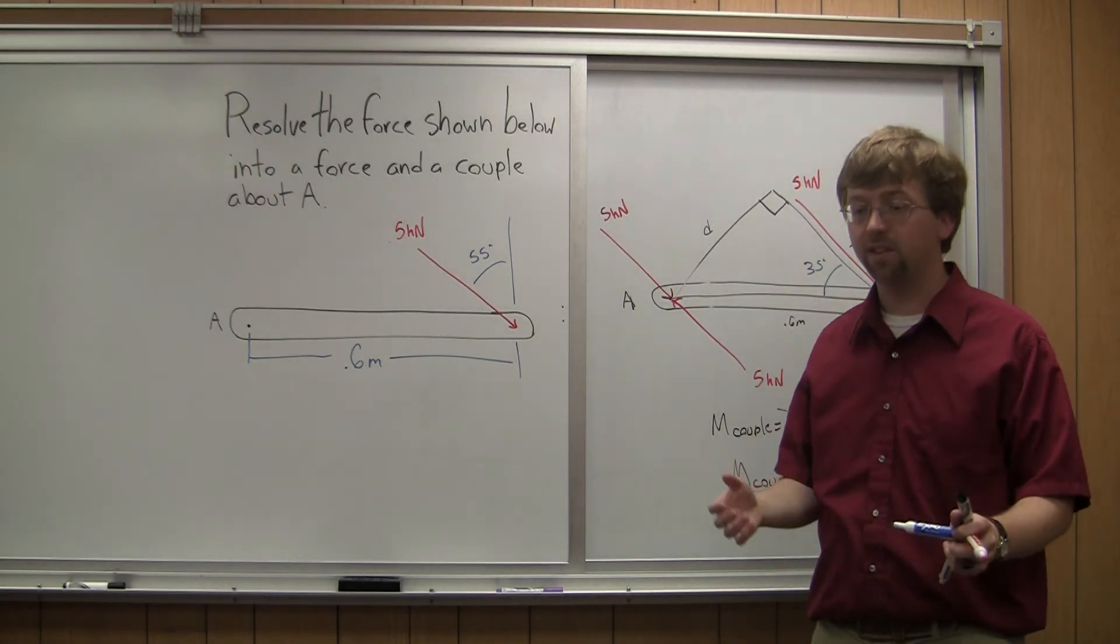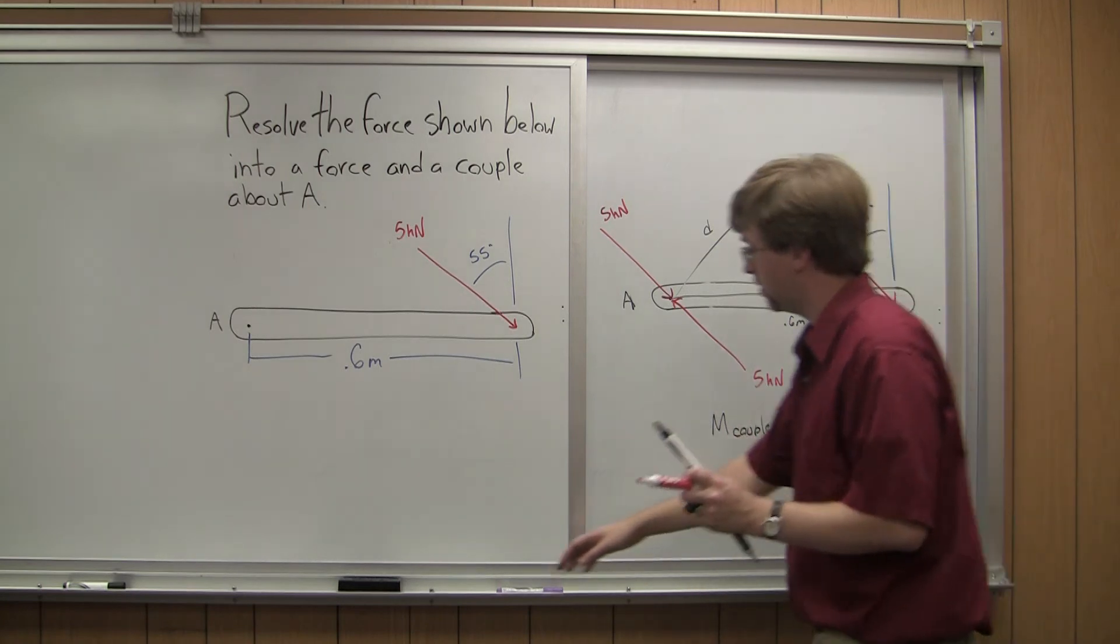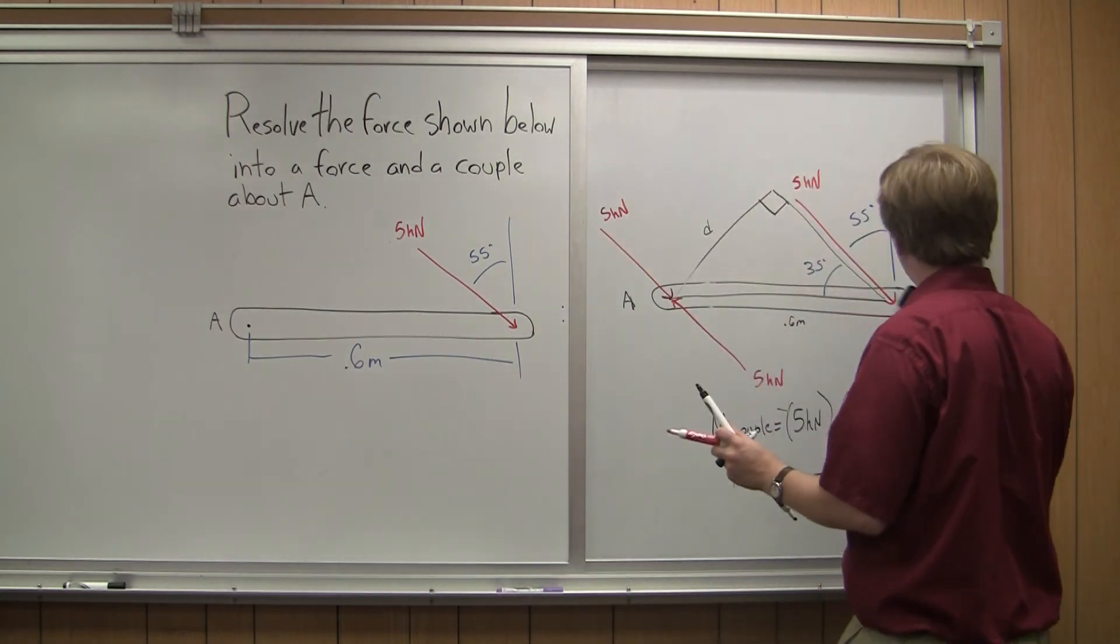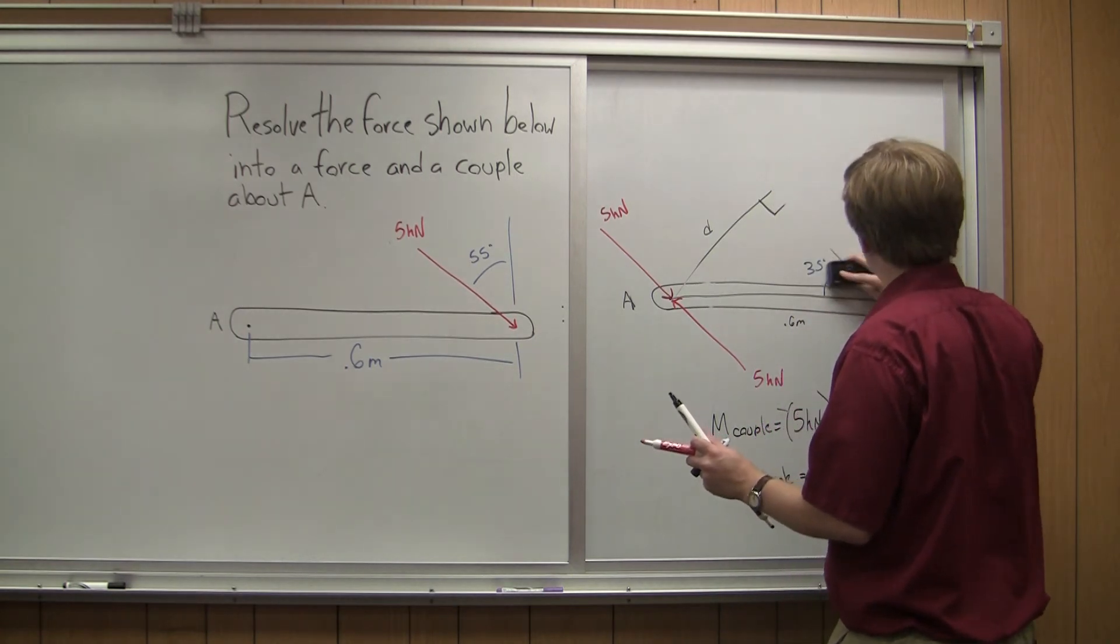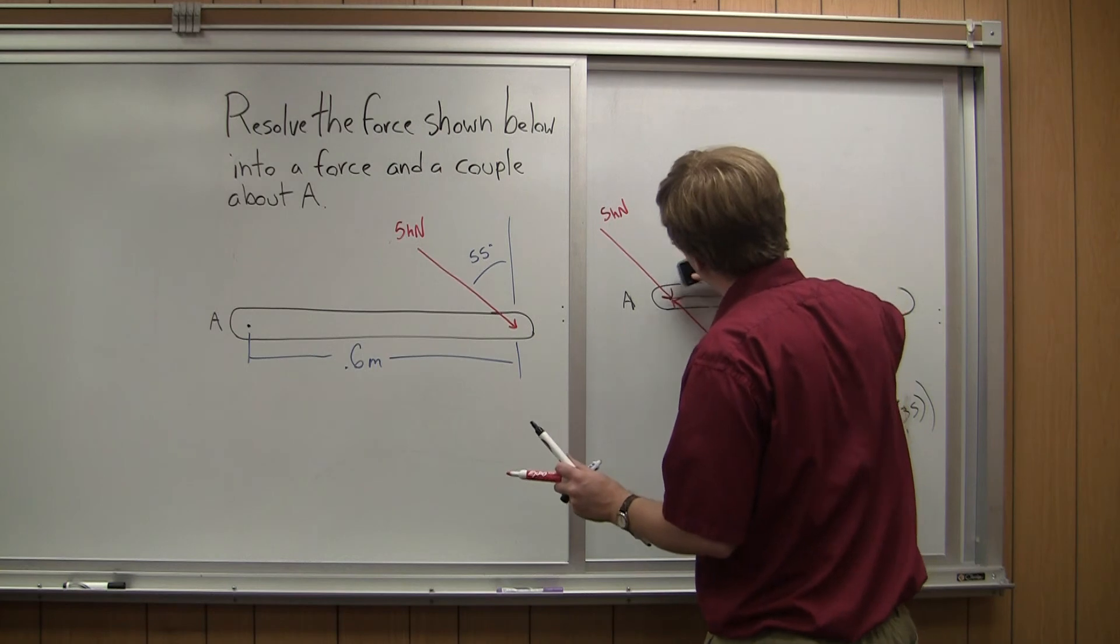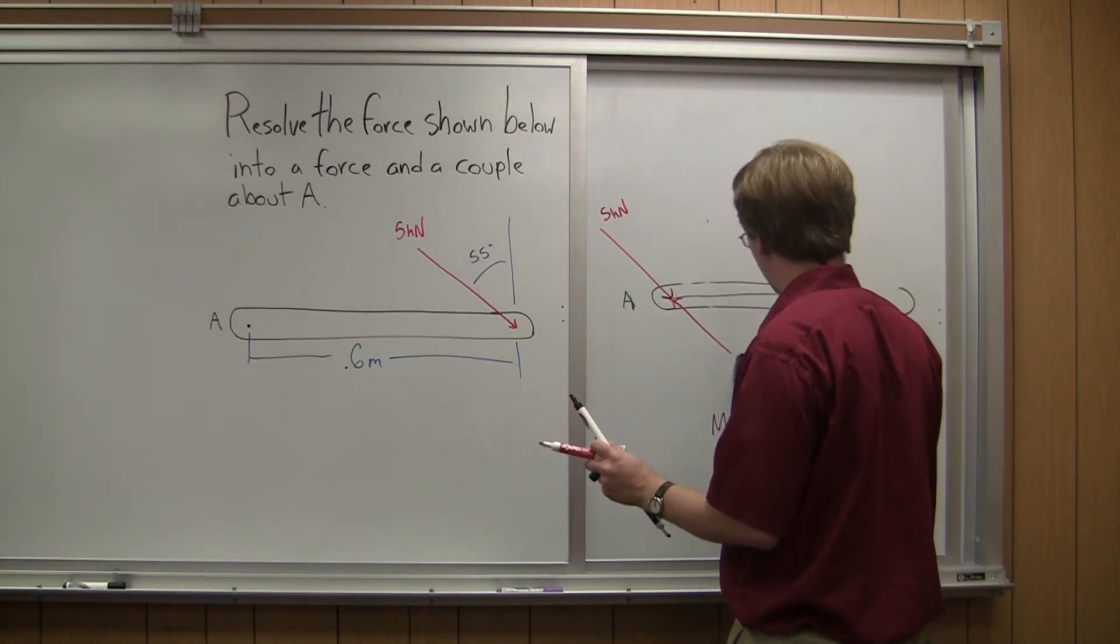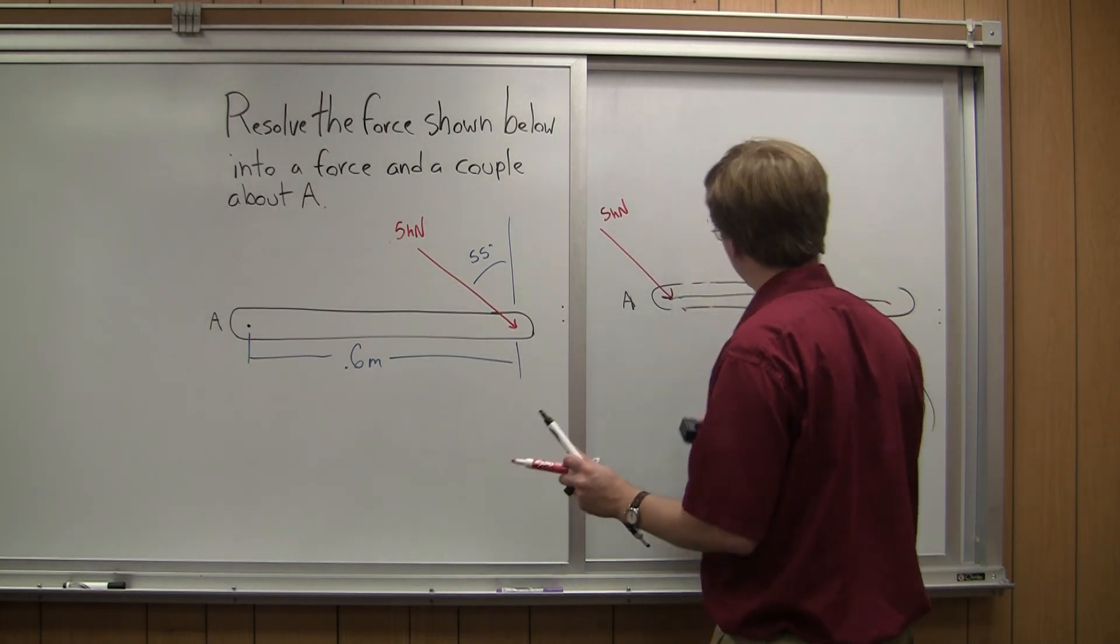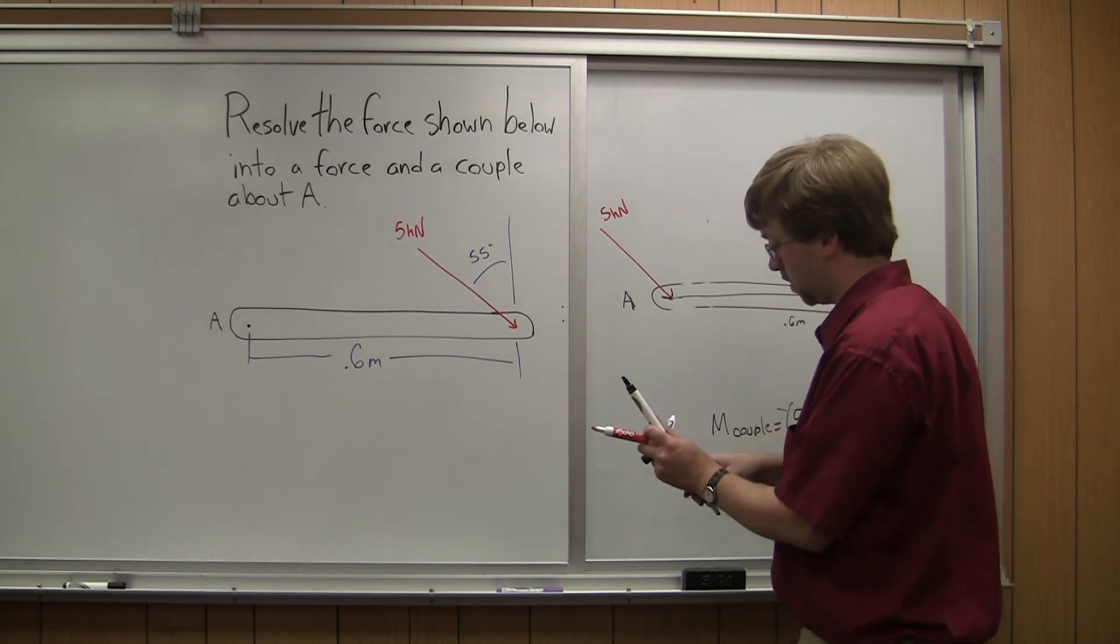So I can start replacing some of these things. I get rid of those two forces that served as my couple. So my original force kind of disappears, as well as the equal and opposite force. The equal and opposite force was this one on the bottom here. So I'm left with that 5 kilonewton force,